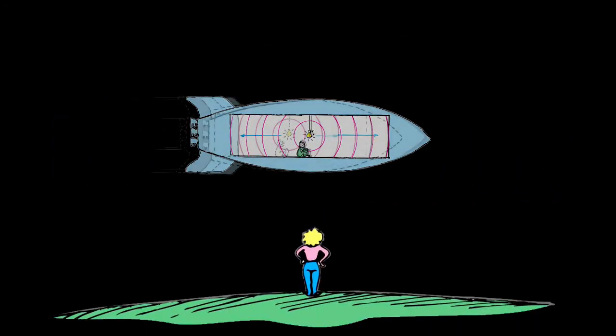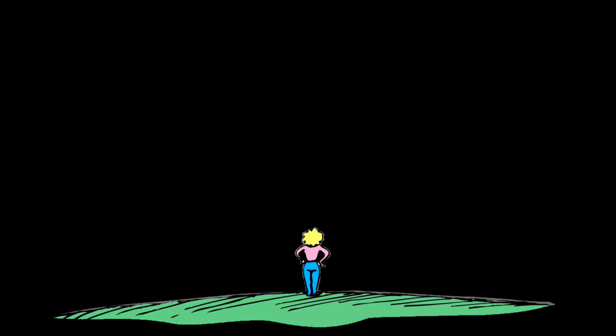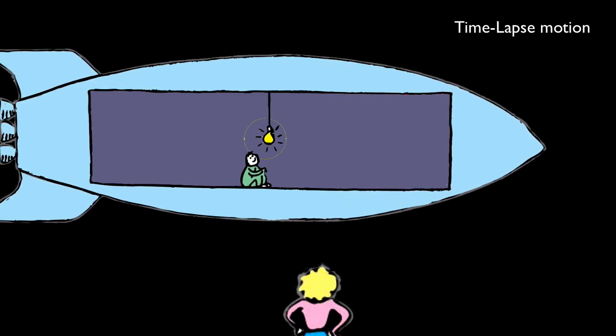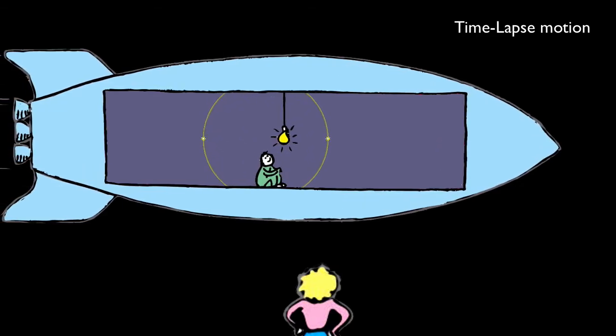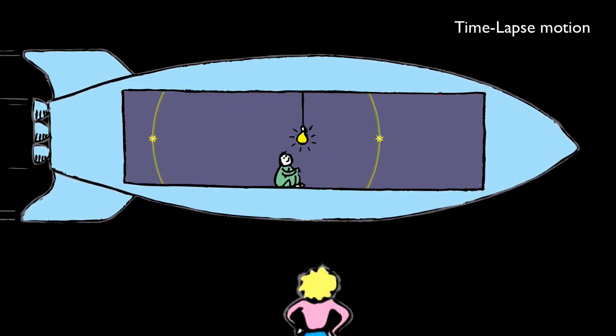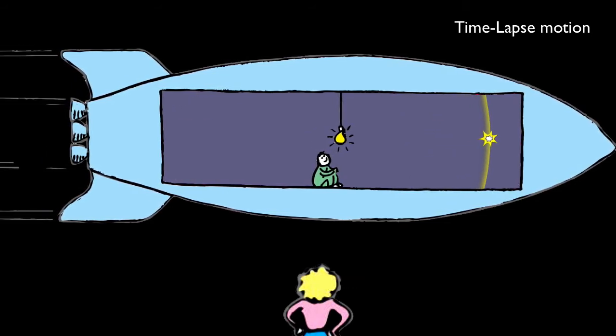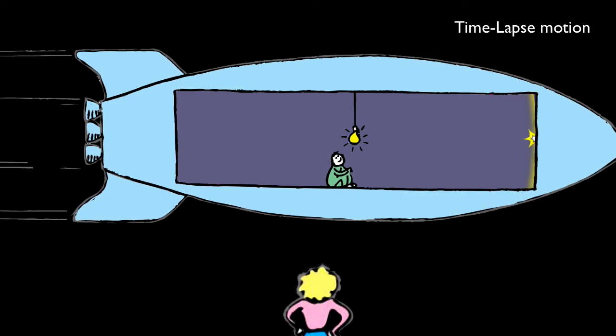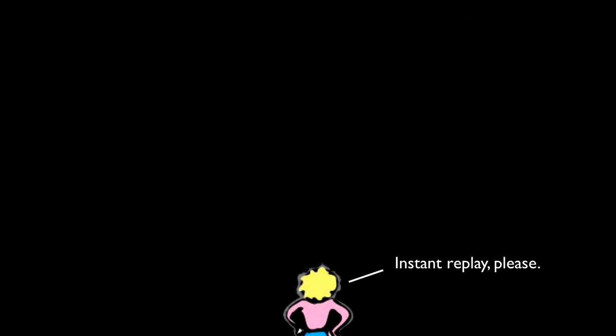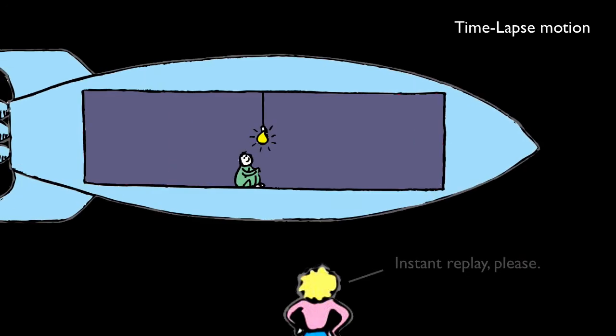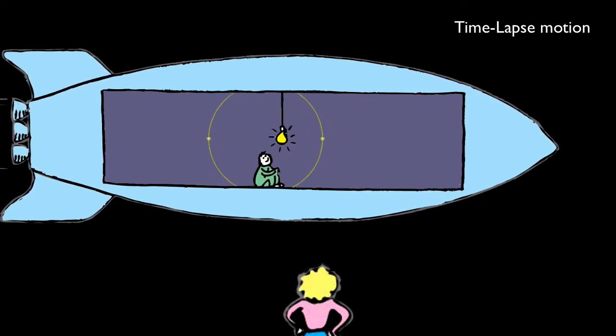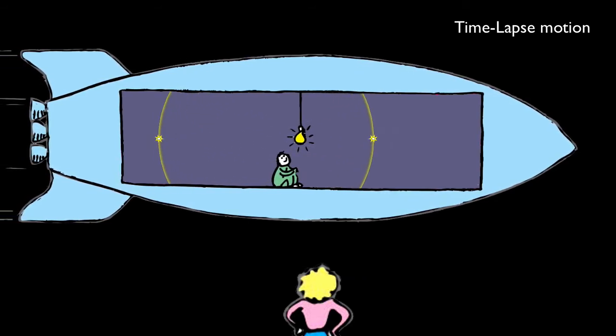Your ship whizzes past a planet where an observer notes something very different about the very same situation. Because the ship is moving so fast, the back wall is traveling toward the light beam while the front wall is receding away. So clearly, the light hits the back wall first, followed by the front wall. So what the astronaut sees as simultaneous, the planet-bound observer sees as clearly not simultaneous.